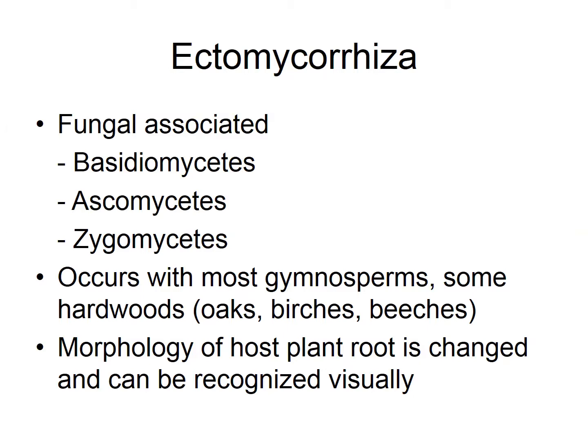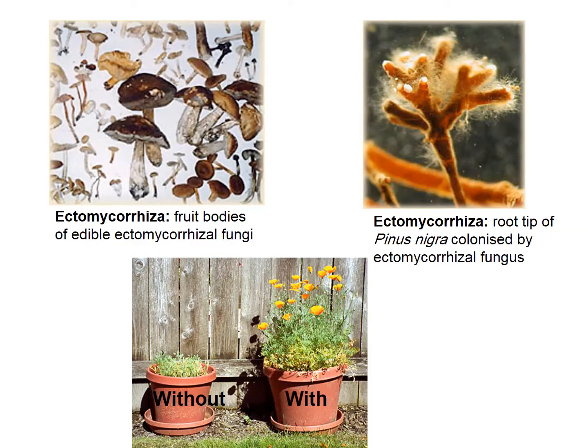If placed in a totally new environment without roots from the previous location, it will be hard for that tree to establish itself, and it will need that fungal association, which is usually species-specific. Several plant species can associate with either Basidiomycetes, Ascomycetes, or Zygomycetes. You can identify an ectomycorrhizal association by visually examining the roots. Here you can see some fruiting bodies of the fungus, and this is the tip of a Pinus nigra root colonized by ectomycorrhizal hyphae.